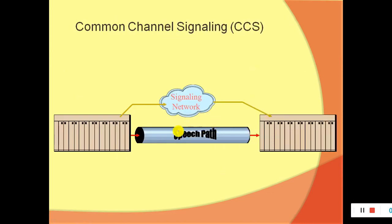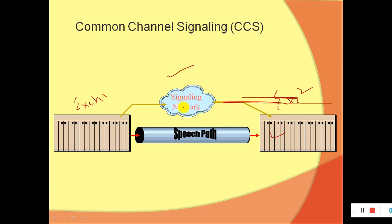In the CCS diagram you can see: this is Exchange 1 and this is Exchange 2. This is the user who wants to send information to another subscriber. Suppose it is an ISD or STD call — we will use the trunk for that purpose. And the signaling network, shown separately, is not part of that voice channel. A separate link is used for the control signals.